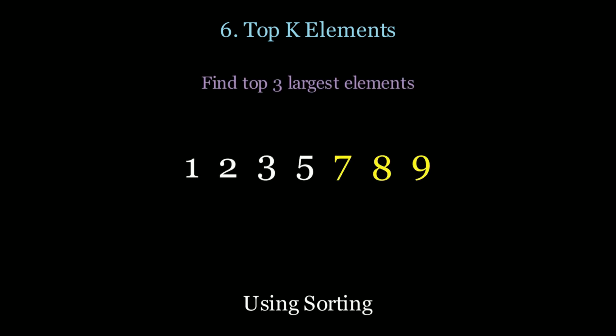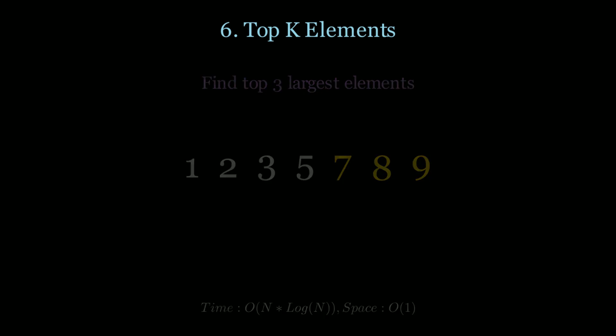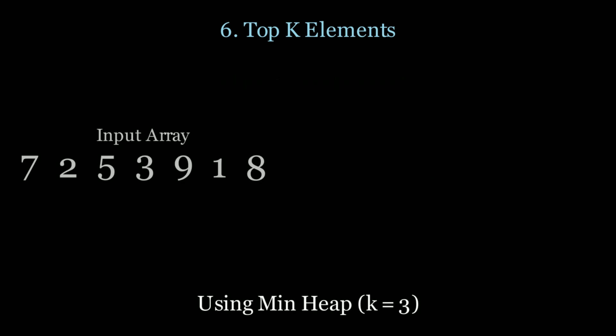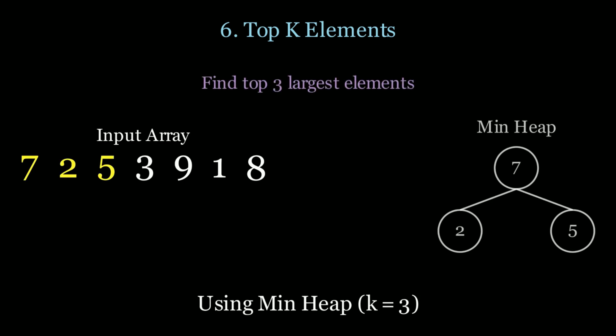We sort and then take the final elements of the array — this takes O(n log n) time. Can we do better? Using a min heap we actually can. We initialize the first K elements into the min heap and heapify. Then for every element greater than the top of the heap, we pop from the heap and insert the new element.